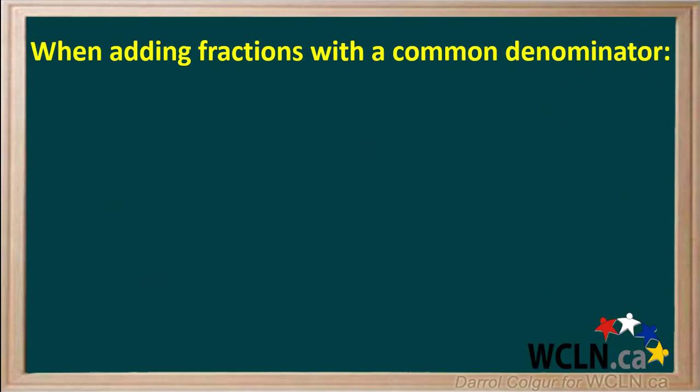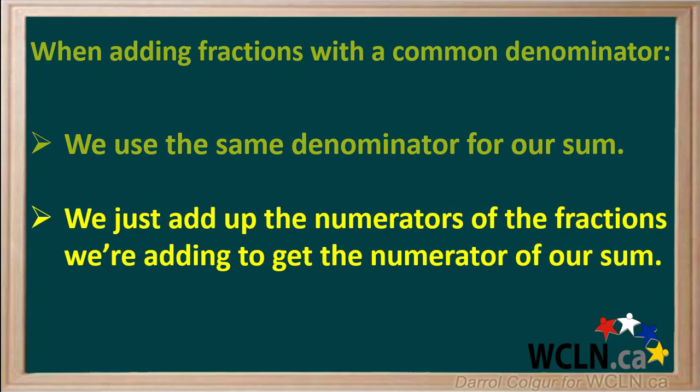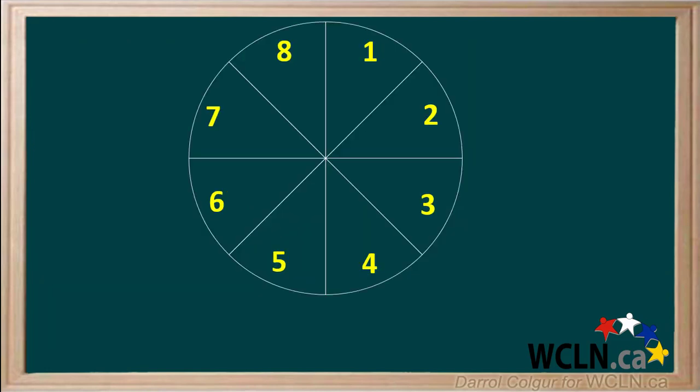We can summarize by saying, when adding fractions with a common denominator, the sum of our fractions has the same denominator. And we just add up the numerators of the fractions we're adding to get the numerator of our sum. We can also easily subtract fractions with common denominators.